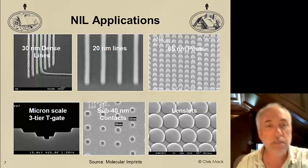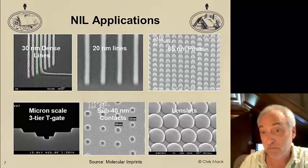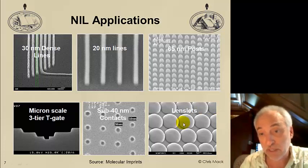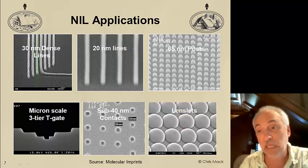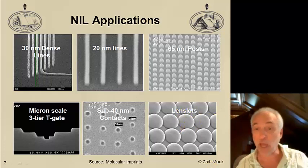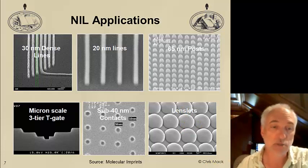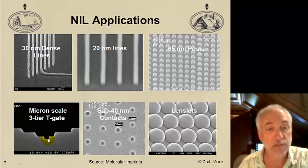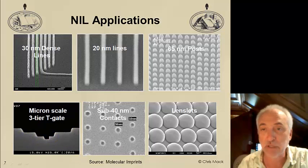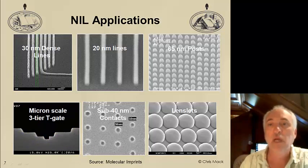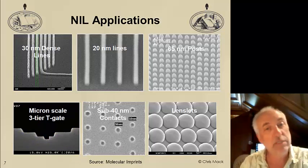Nano imprint can print small features. It can also be used to print lenslets — little lenses in an array — which have interesting applications. It can print more complicated patterns with multiple steps in the topography, not just one step size, and as a result there are some interesting applications possible.